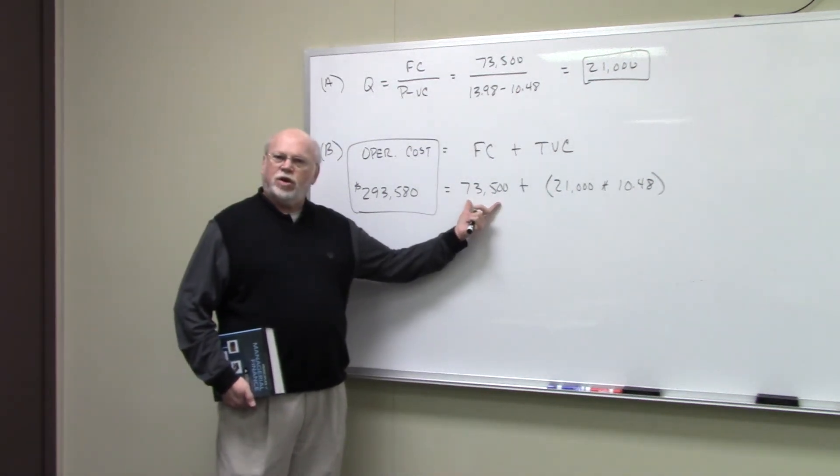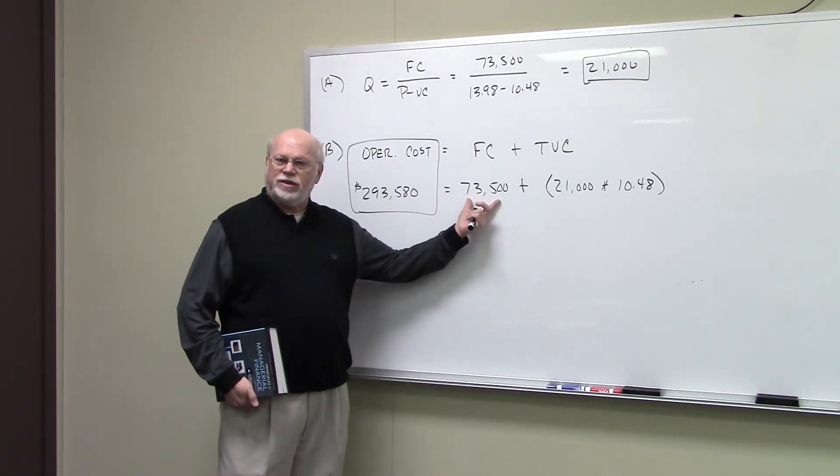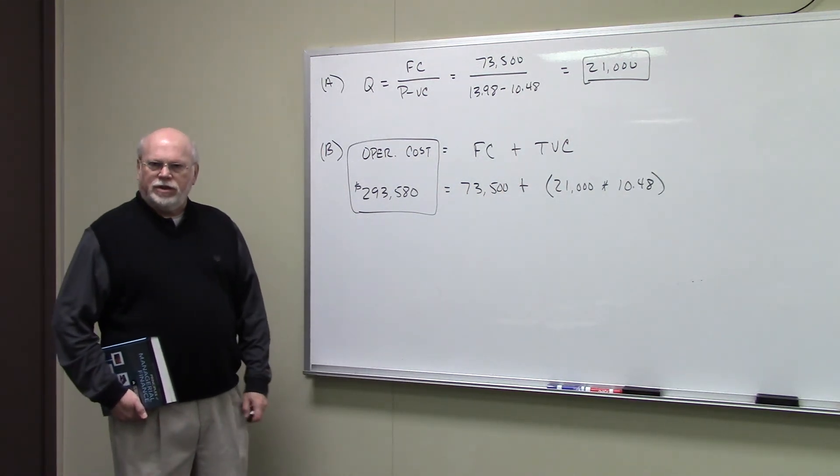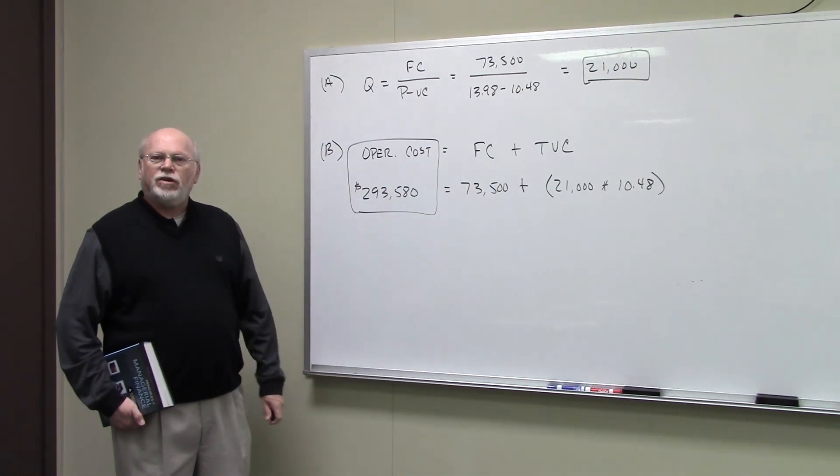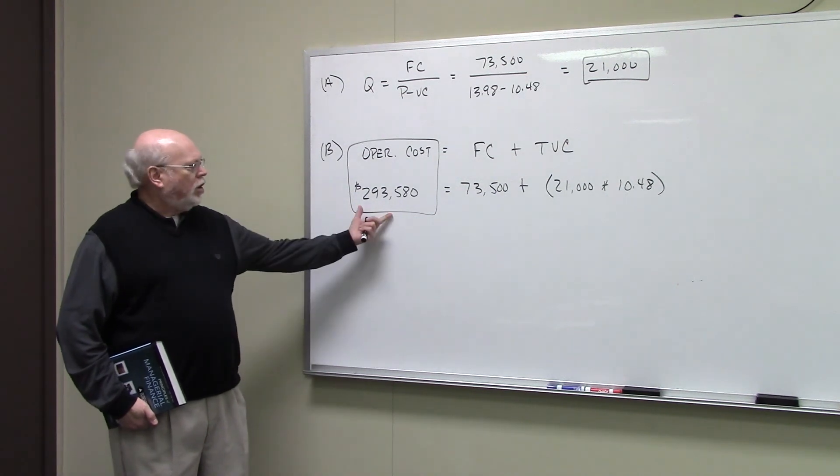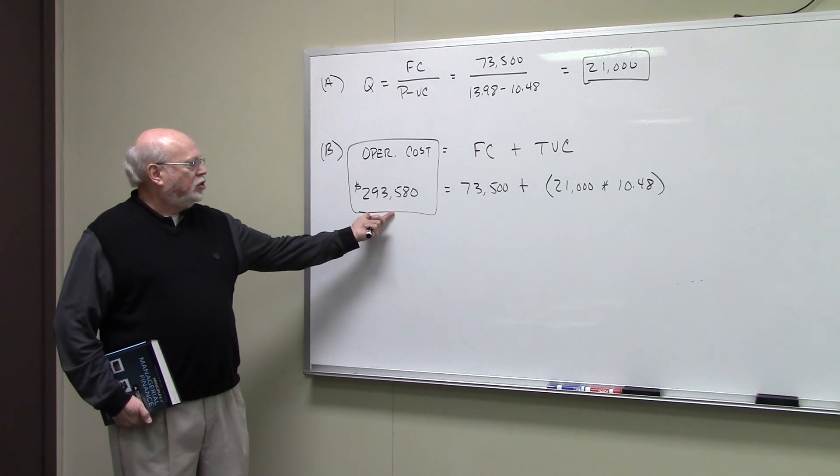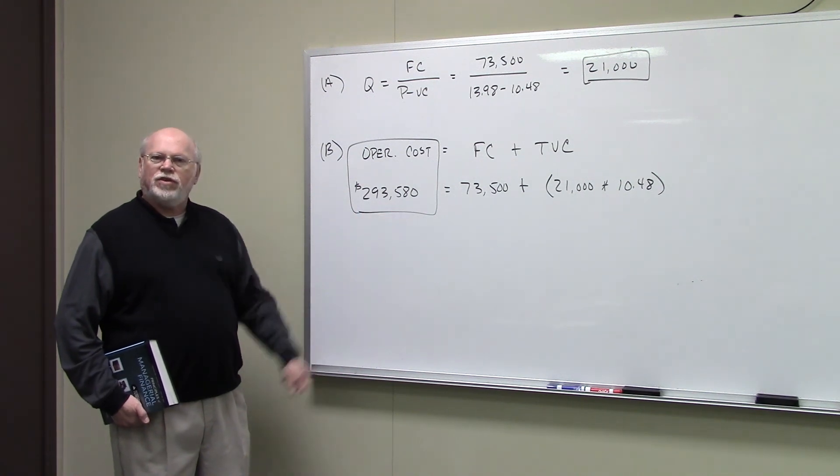we would take the fixed cost of the company, $73,500, add to that the total variable cost. The number of units produced and sold, 21,000, times the variable cost per unit, which is $10.48. All summed up, the operating cost at breakeven is $293,580.